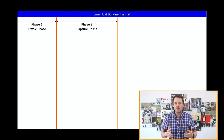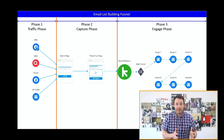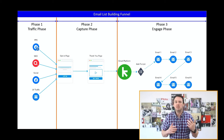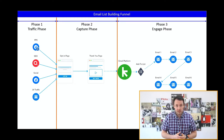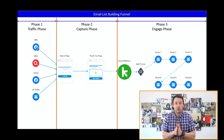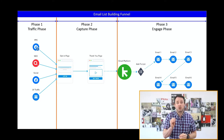Once we have our funnel ready to go, the very first thing we need to do is start driving traffic to it. Phase one is the traffic phase. This is such an important step because we have to ensure that we're driving the right people at the right time at the right price. This brings us to phase two, and phase two is the capture phase. The goal here is to convert the traffic into subscribers and to get the subscriber's email address over to our email provider.